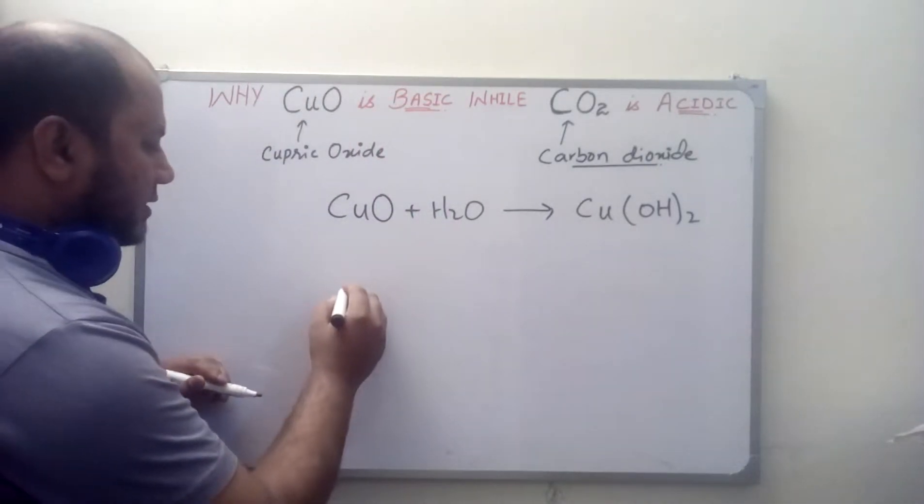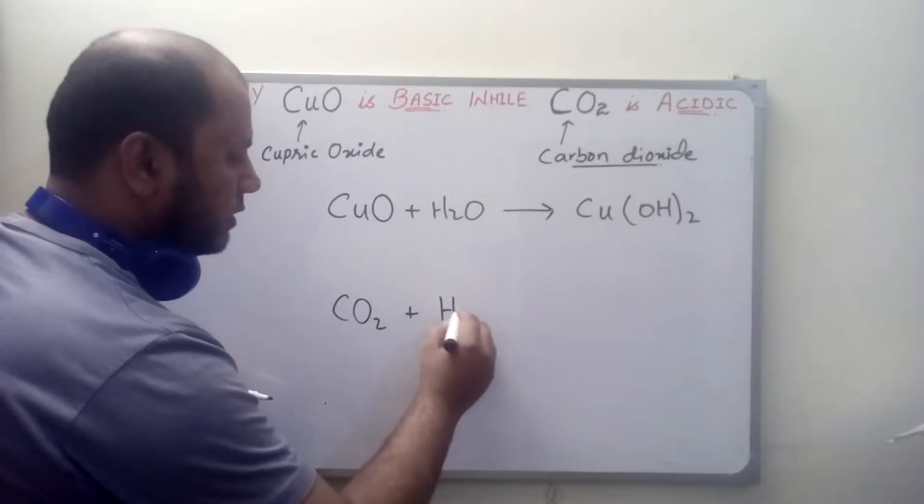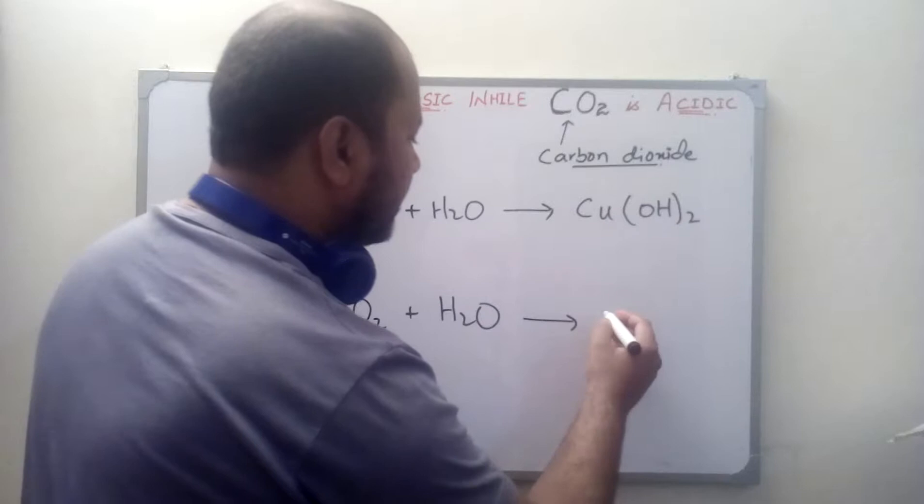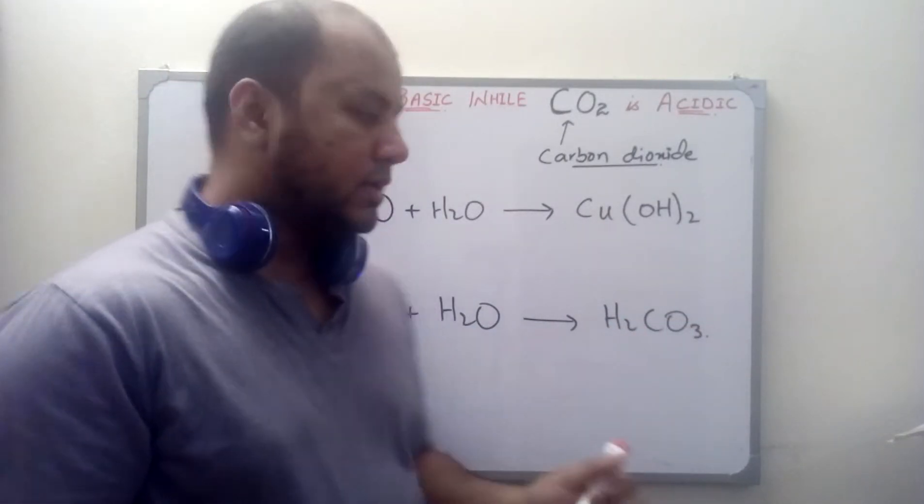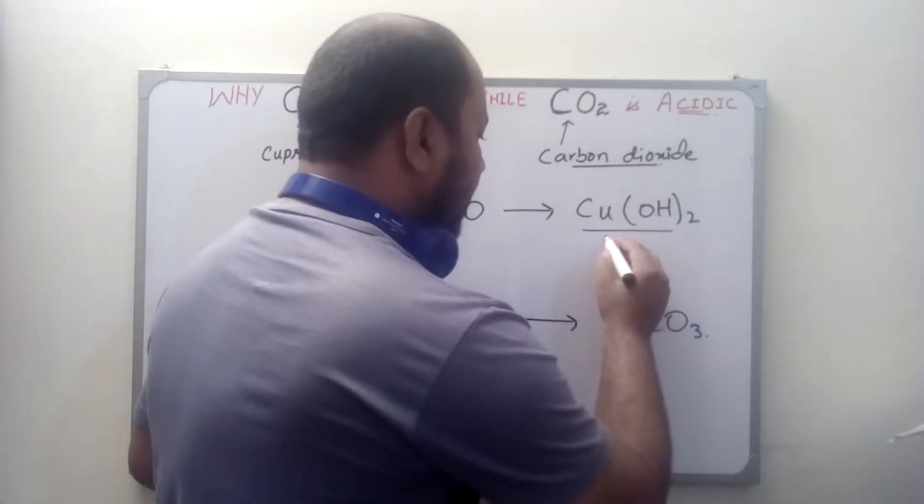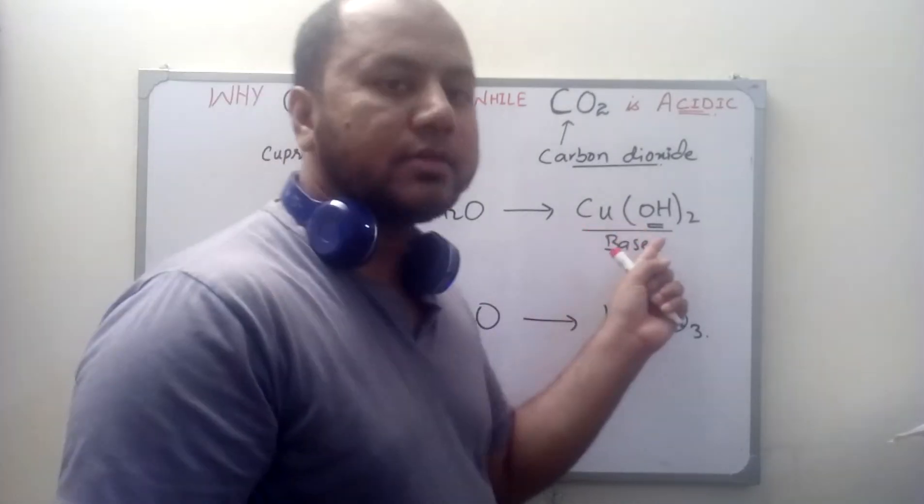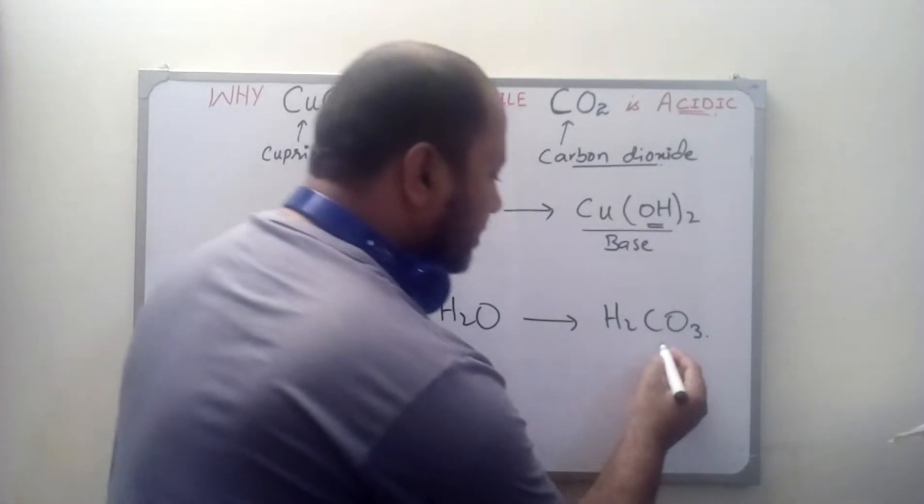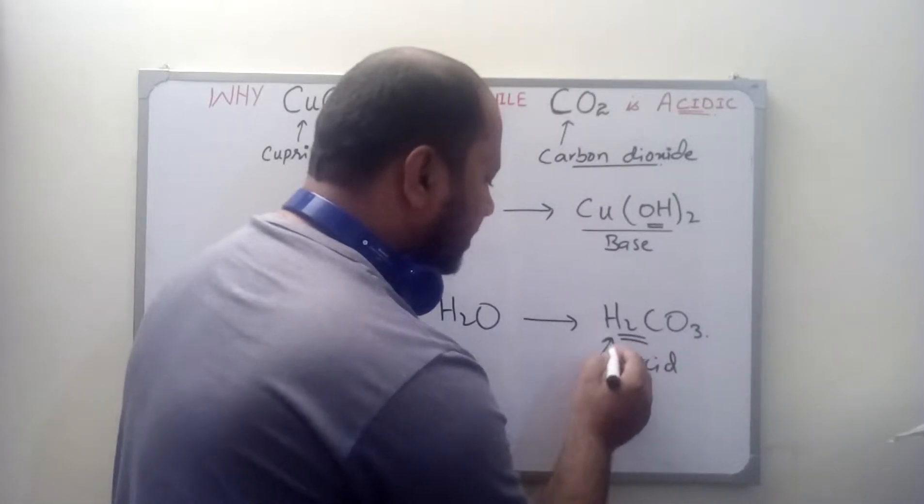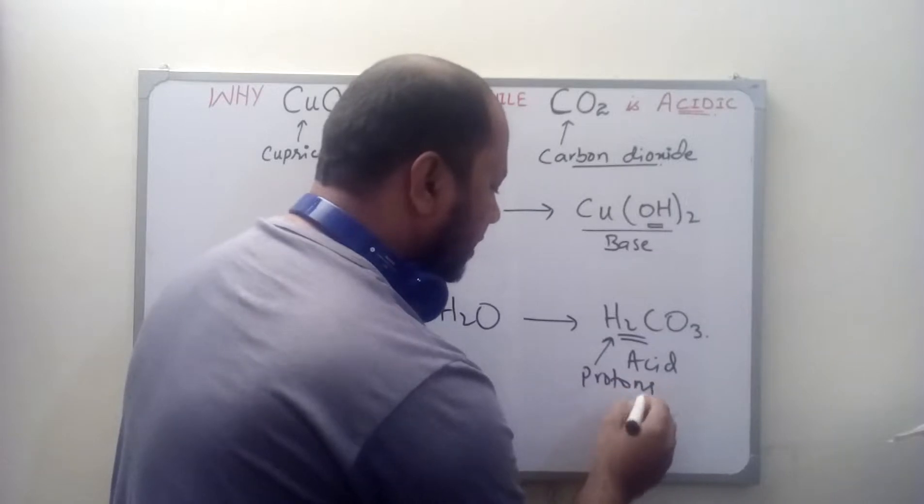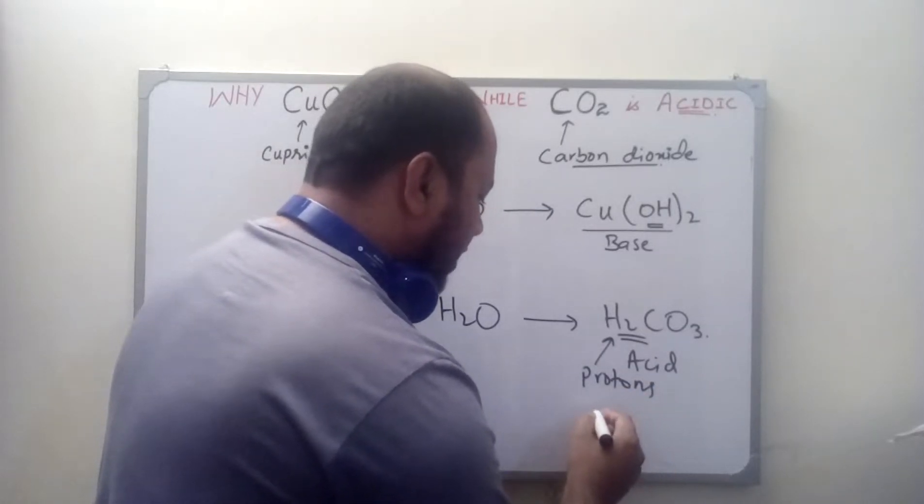Next, when you add carbon dioxide in water you get carbonic acid. Now what does it mean? This is a base because according to Arrhenius it contains hydroxyl ions inside it, and this is an acid because it contains protons or hydrogen ions.